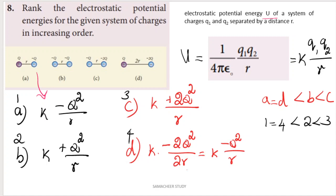We have to calculate the electrostatic potential energy in 4 different scenarios and arrange them in increasing order. Comparing cases 1 and 4, they are the same, so we write 1 equal to 4.